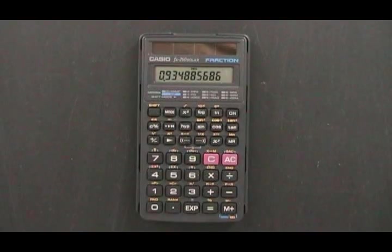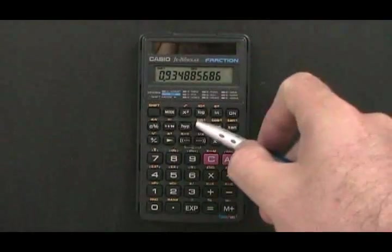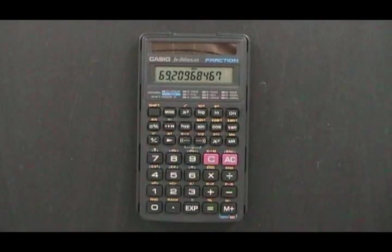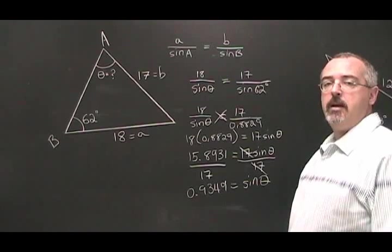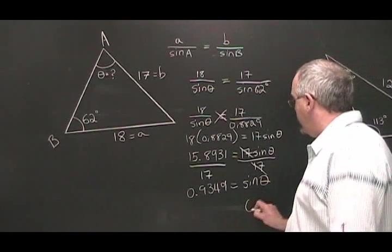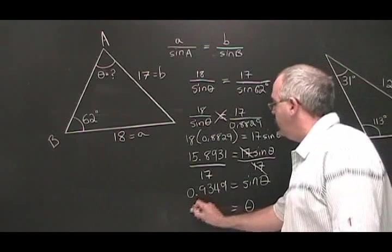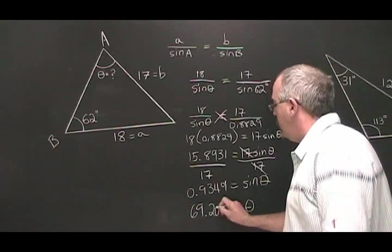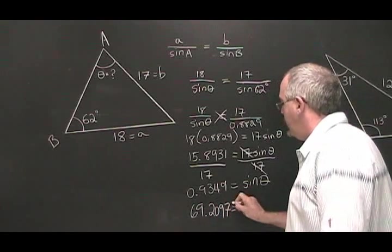The inverse sine of 0.9349 is equal to 69.2097 degrees. And now we know that theta is equal to 69.2097 degrees.